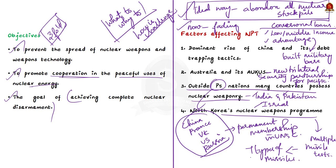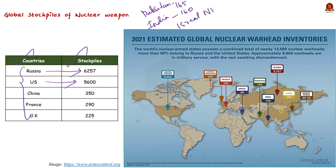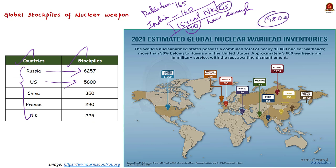Though nuclear-powered countries issued a joint statement regarding disarmament, the reality is completely different. Russia has 6,257 nuclear stockpiles; the US has 5,600. Outside P5 countries, Pakistan possesses about 165 and India about 160 nuclear weapons. Israel and North Korea either possess or have enough fissile material to build 90 and 45 weapons respectively. The world's stockpile peaked in the 1980s and reduced considerably until 2005.